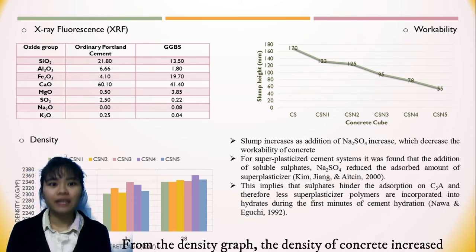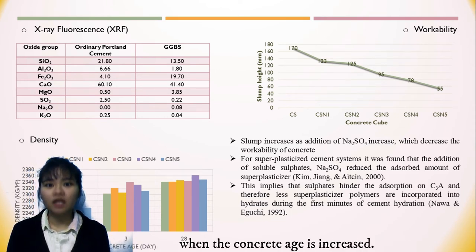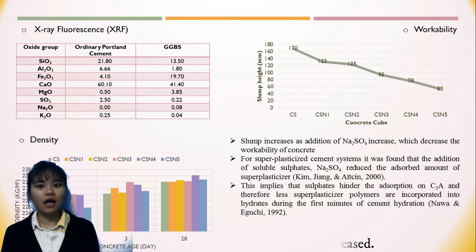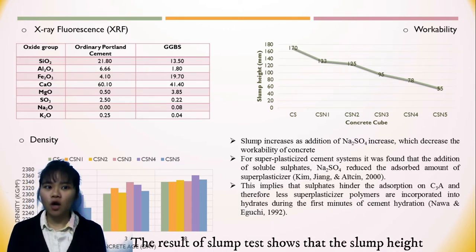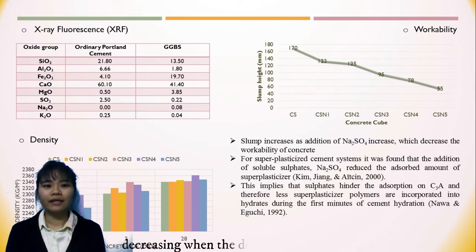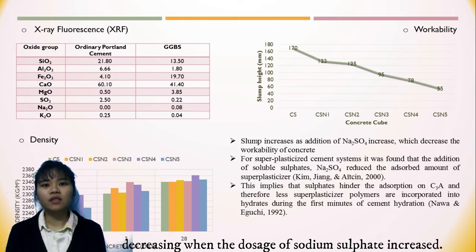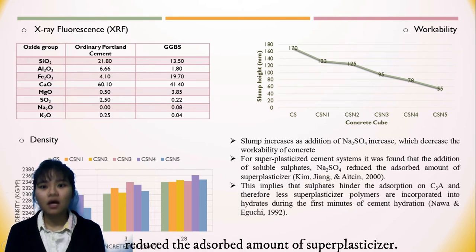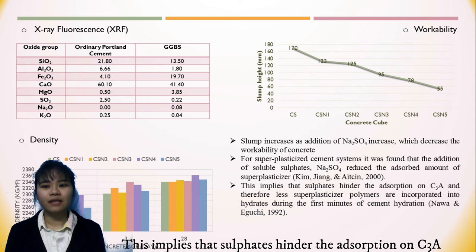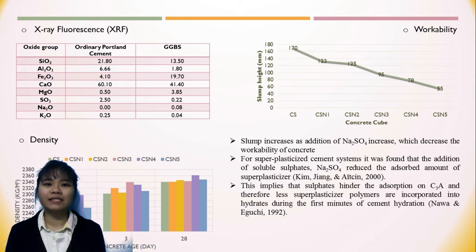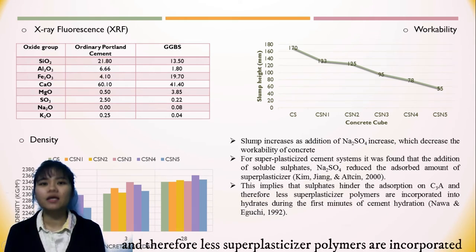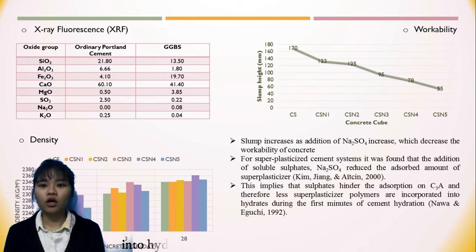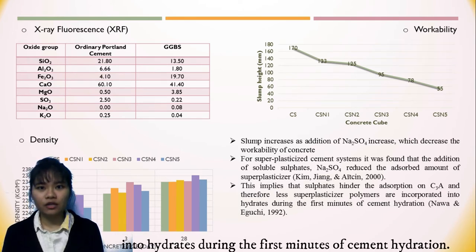From the density graph, the density of concrete increases as the concrete age increases. The result of the slump test shows the slump height decreasing as the dosage of sodium sulfate increases. This is because the addition of soluble sulfate reduces the absorption amount of superplasticizer, implying that the sulfate affects the absorption of C3A and therefore fewer superplasticizer polymers are incorporated into the hydrate during the first minutes of cement hydration.